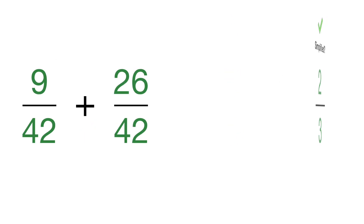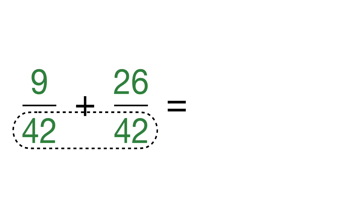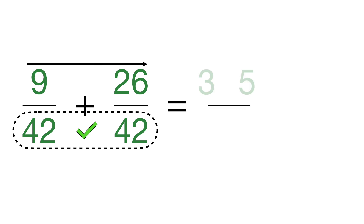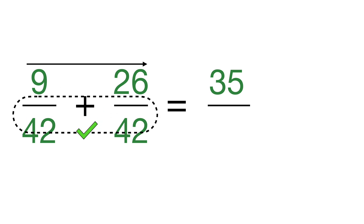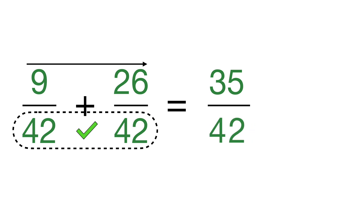Let's do another example: 9/42 plus 26/42. The denominators are the same. Add the numerators across the top: 9 plus 26 is 35. The denominator will stay the same as 42, giving us 35/42.